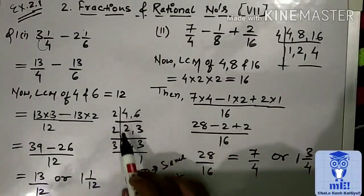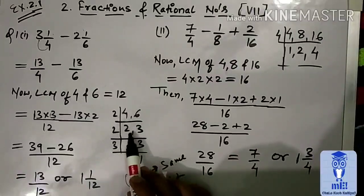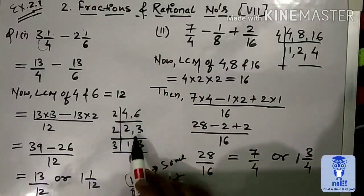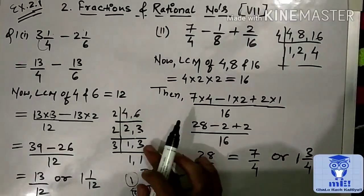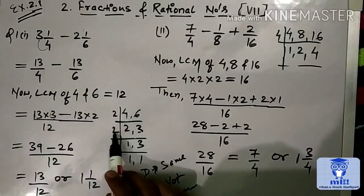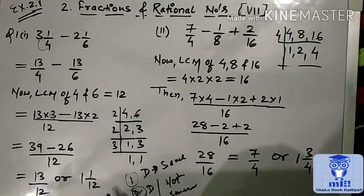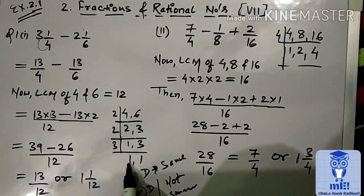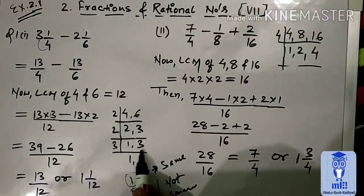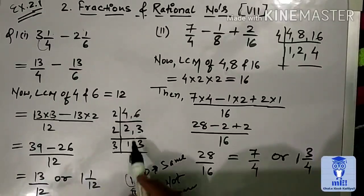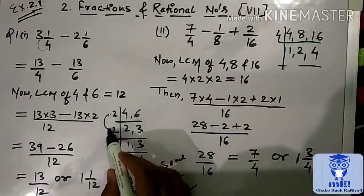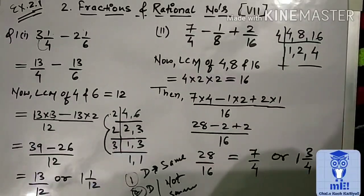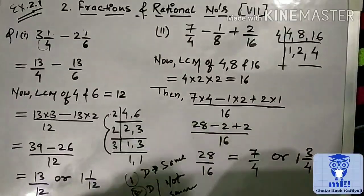Here it is. 2, 2 is a 4. 2, 3 is a 6. Again, 2, 1 is a 2. 2, 2, 3. It's not divisible by 2. So, write as it is. Next, 3. 1, this 1 as it is. Then, 3, 1 is a 3. So, it means the LCM of 4 and 6 is 2 into 2 into 3. 2, 2 is a 4. 4, 3 is a 12.